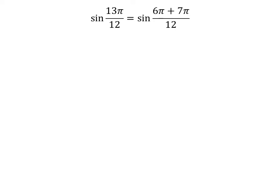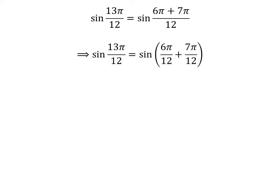13 times pi is equal to 6 times pi plus 7 times pi. So, sine of 13 times pi upon 12 is equal to sine of 6 times pi plus 7 times pi upon 12. The fraction can be expressed as a sum of two fractions. So, sine of 13 times pi upon 12 is equal to sine of 6 times pi upon 12 plus 7 times pi upon 12.